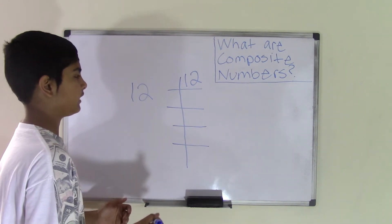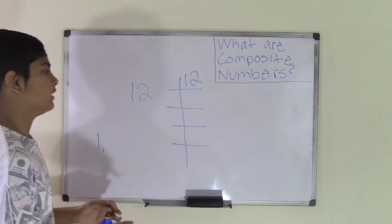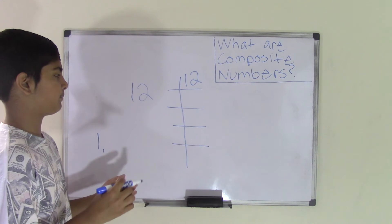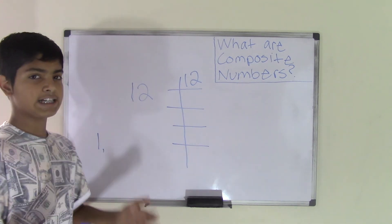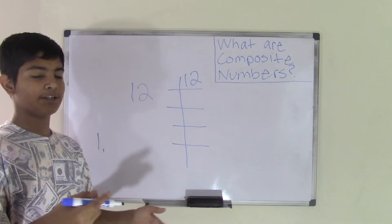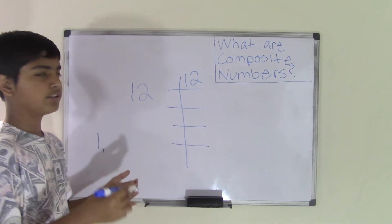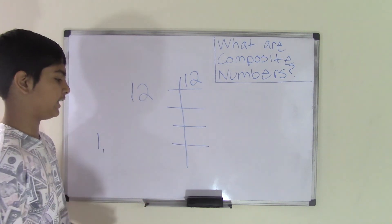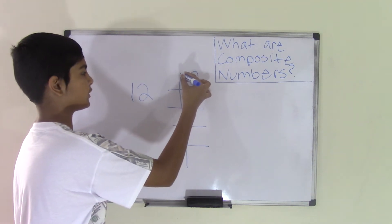Before we do anything, I would like you to put the number 1 automatically into the list, because 1 times any number is that number. So every number would be a factor of 1, right? So we cannot do that. We have to start with the second number aside from 1, which is the number 2.